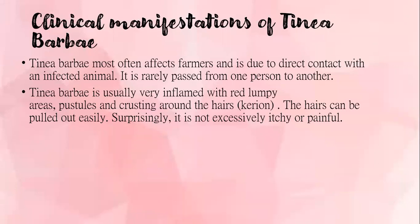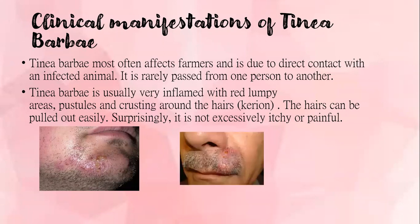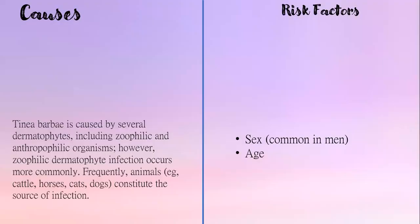For clinical manifestations, tinea barbae most often affects farmers and is due to direct contact with an infected animal. It is rarely passed from one person to another. It is usually very inflamed with red lumpy areas, pustules, and crusting around the hairs. The hairs can be easily pulled out, but surprisingly it is not excessively itchy or painful. It is caused by several dermatophytes including zoophilic and anthropophilic organisms, with zoophilic infections occurring more commonly.